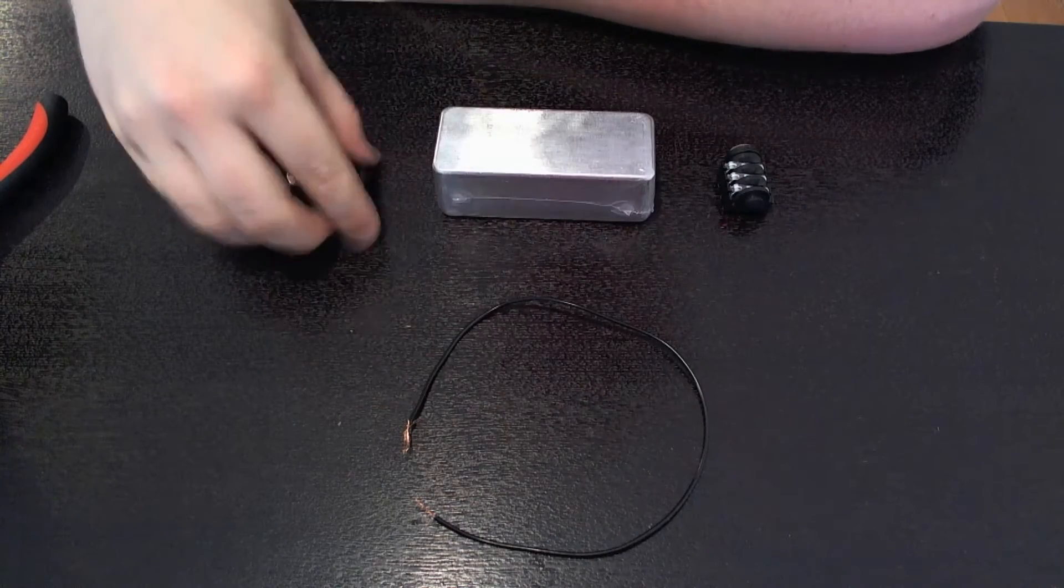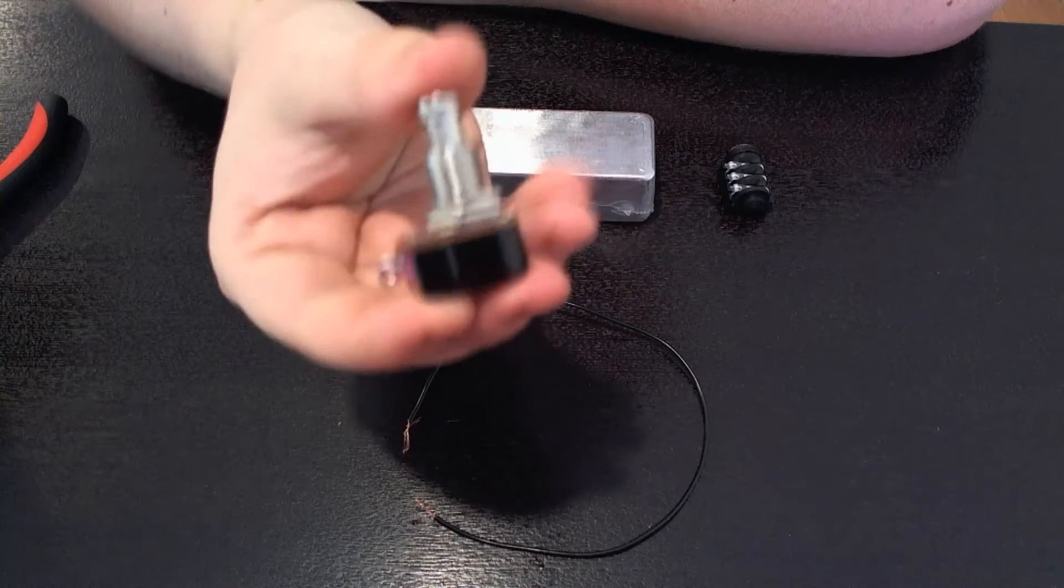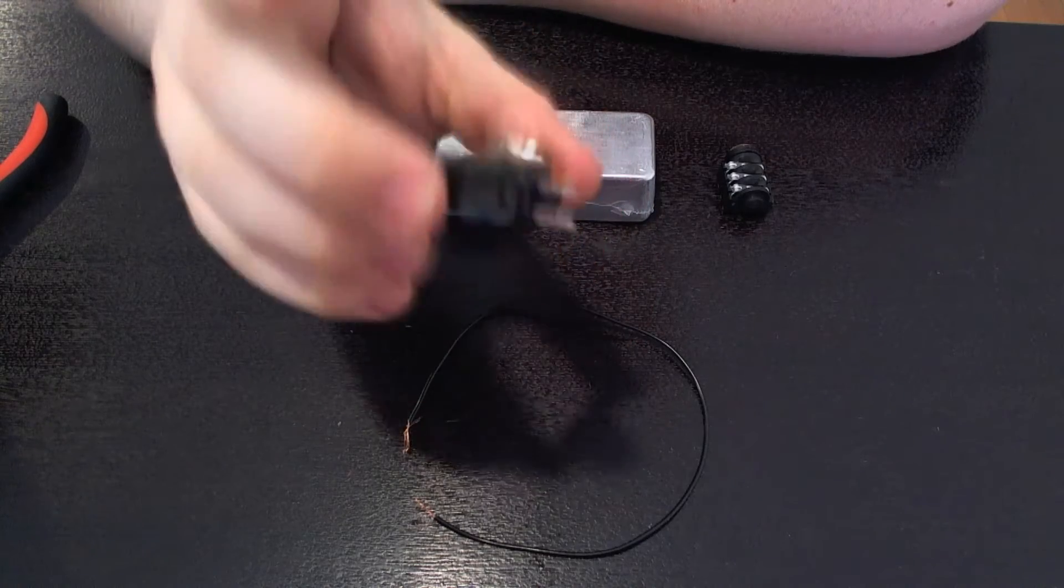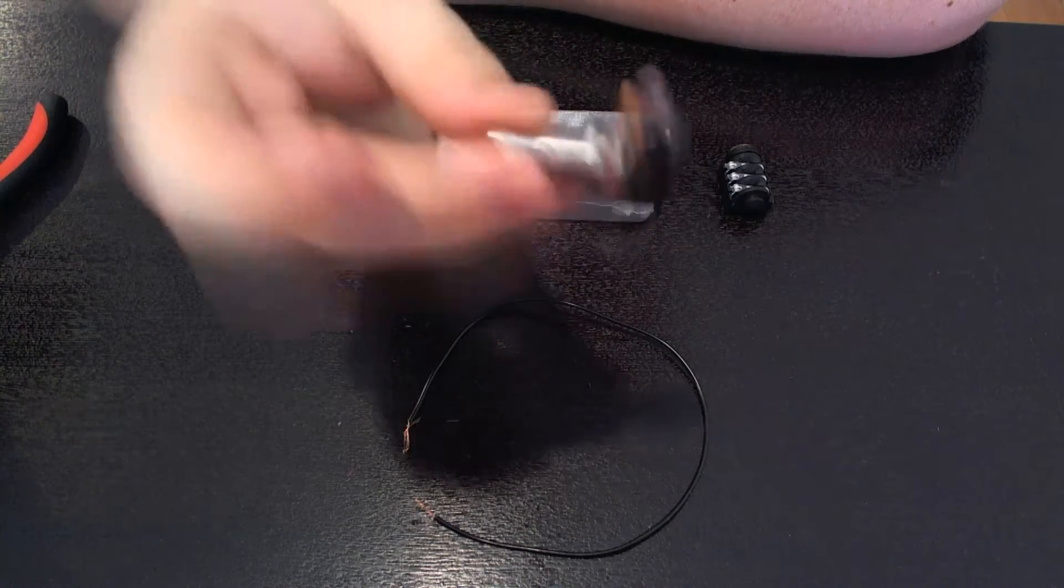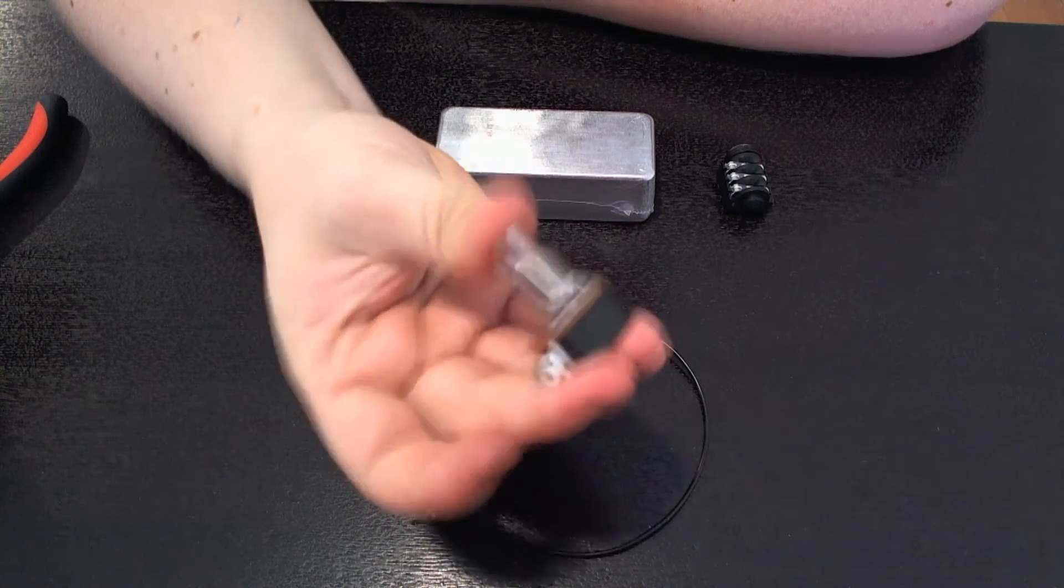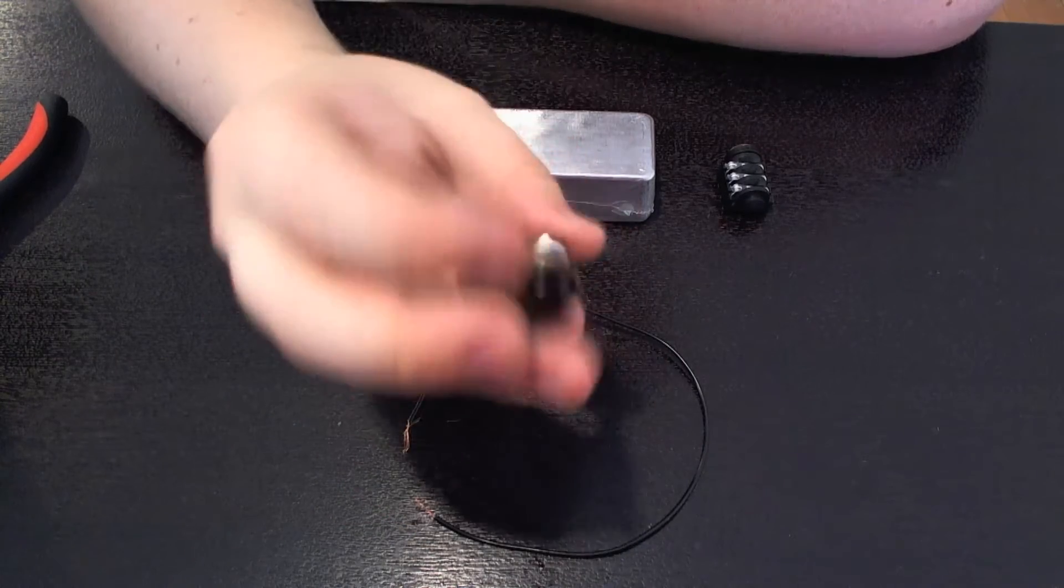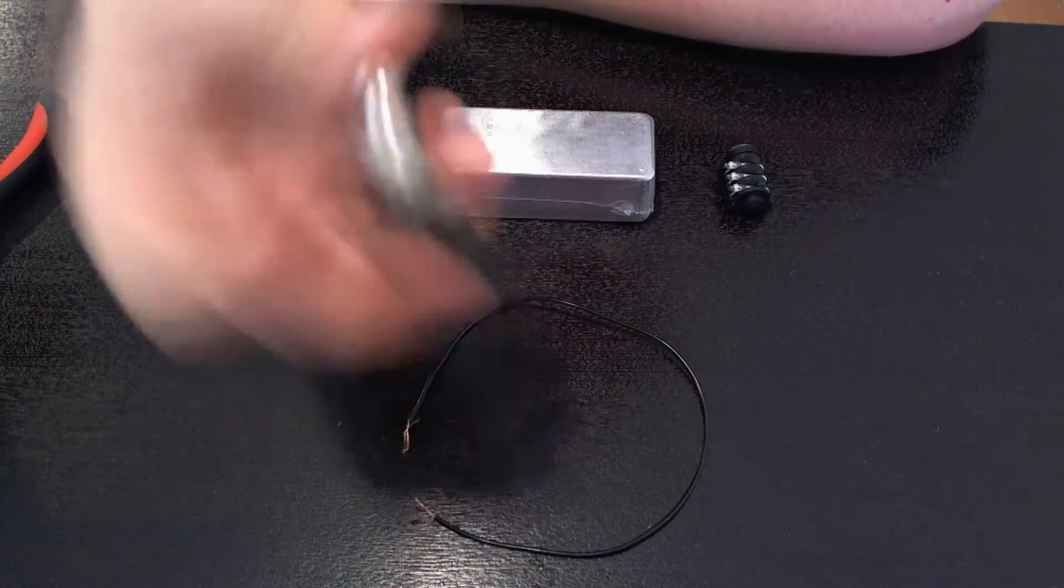So next we'll need two of these. These are momentary switches. If you can find some with the smaller base that might help work out for space constraints inside the enclosure. However, these ones are nice and heavy duty which is good when you're going to be tapping them.